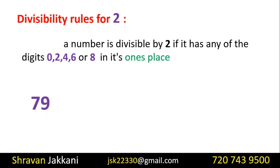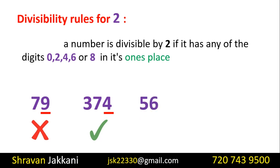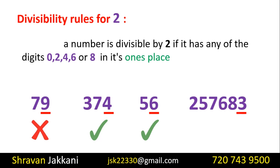For example, consider the number 374. The ones place is 4, so this number is divisible by 2. Next, consider 56. The ones place is 6, so this number is divisible by 2. If the ones place is 3, an odd number, then the number is not divisible by 2. This is the divisibility rule of 2.